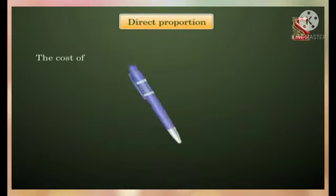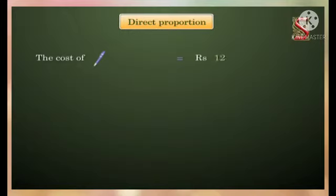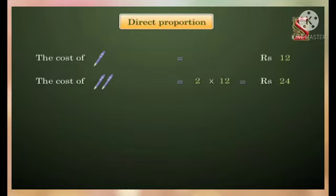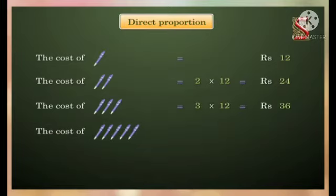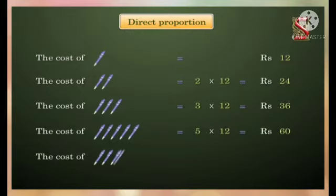Direct proportion. Let us assume the cost of one pen is 12 rupees. Then, by the unitary method, we can find the cost of any number of pens. Cost of two pens is Rs. 24 (2×12), cost of three pens is Rs. 36 (3×12), cost of five pens is Rs. 60 (5×12), cost of eight pens is Rs. 96 (8×12), and so on.